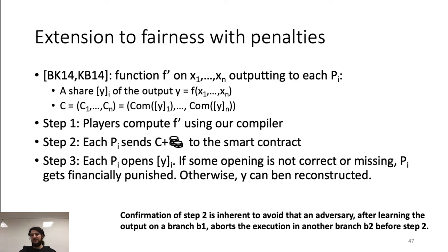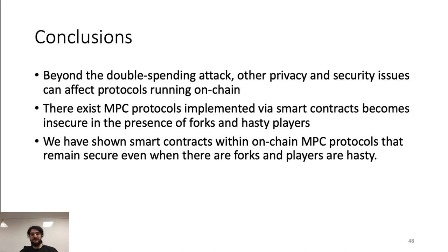We notice that confirmation of step 2 is inherent to avoid the following attack: the adversary learns the output on branch B1, then aborts execution in branch B2 before step 2. If branch B2 is confirmed, the adversary will not be punished, so the protocol cannot achieve fairness with penalties. In this talk, we showed that beyond the double spending attack, other privacy and security issues can affect protocols running on chains. We proposed the case of the lottery protocol, but other MPC protocols implemented via smart contracts can become insecure in the presence of forks and hasty players. Finally, we have shown smart contracts that execute MPC protocols on chains that remain secure even when there are forks and players can be hasty.